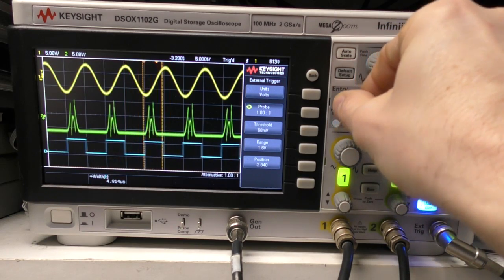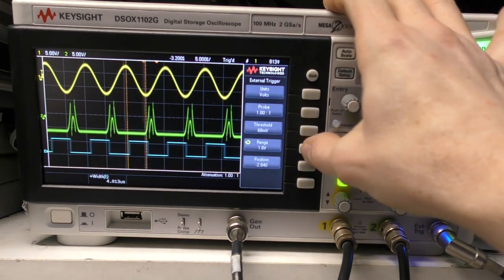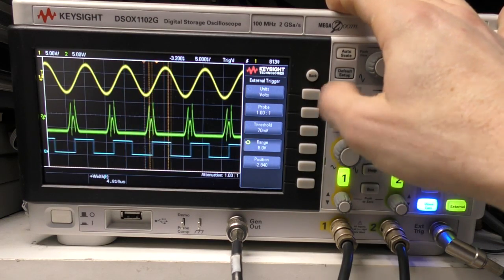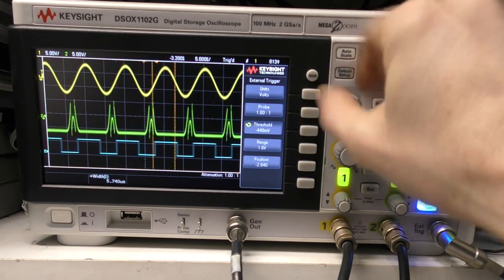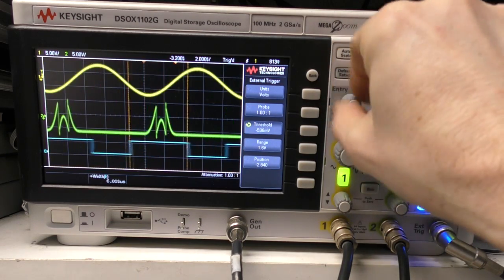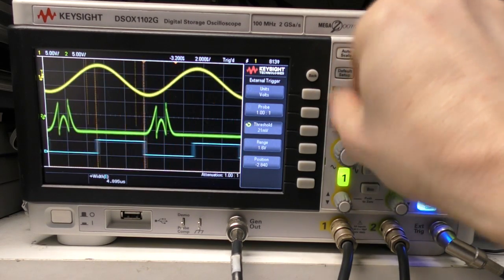So our fundamental ranges are 1.6 and 8V. And this is plus-minus 1.8V. So I can set the threshold anywhere between those two ranges, down from minus 1.6V up to plus 1.6V.